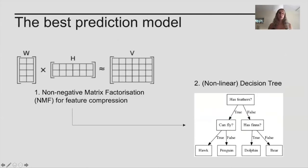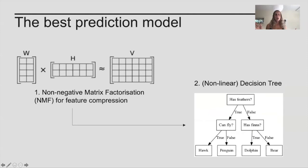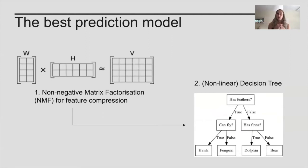Here is the best prediction model explained: the Non-negative Matrix Factorization breaks down the feature space into two different matrices which, when multiplied together, equal the original data plus some reconstruction error. We then take the H matrix — the five components to which the original feature space has been reduced — and input those into a regression tree.